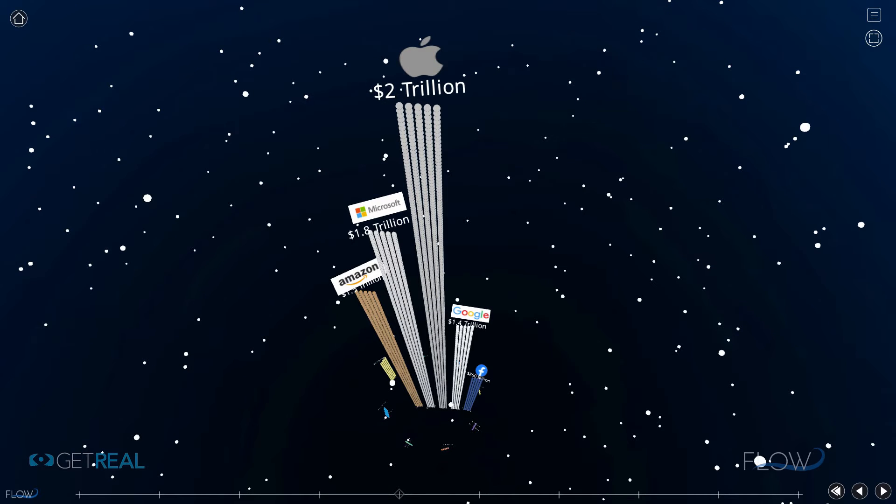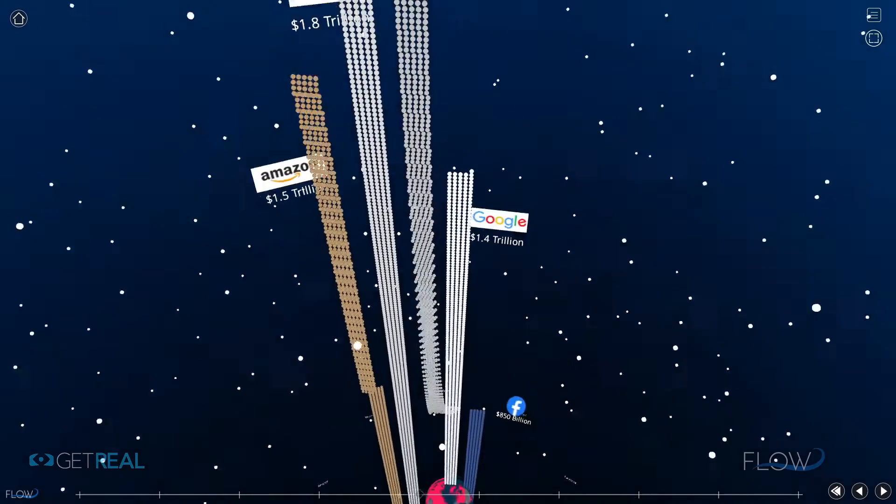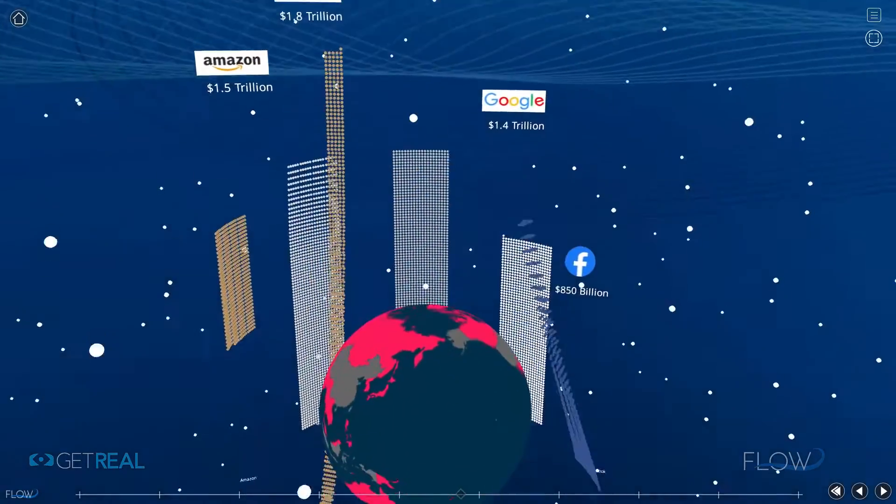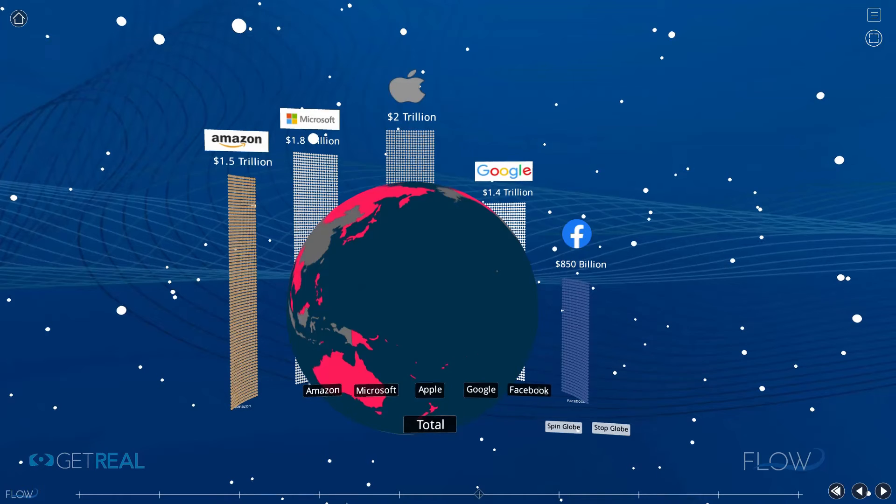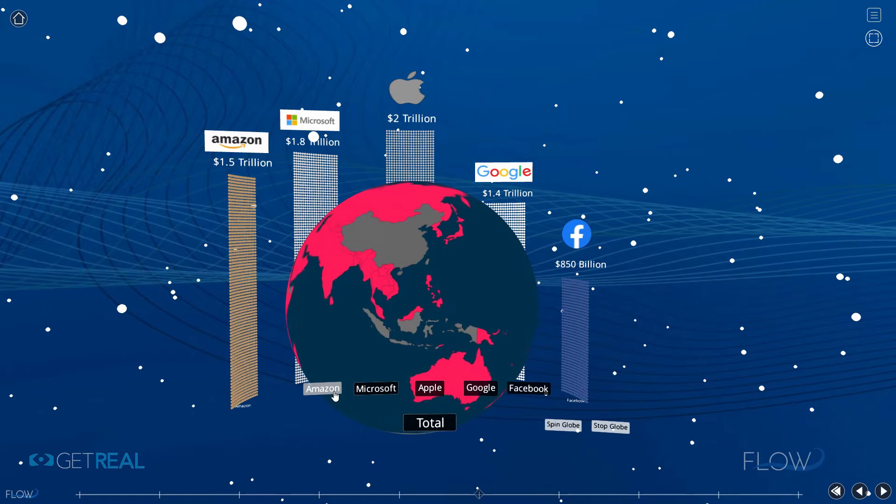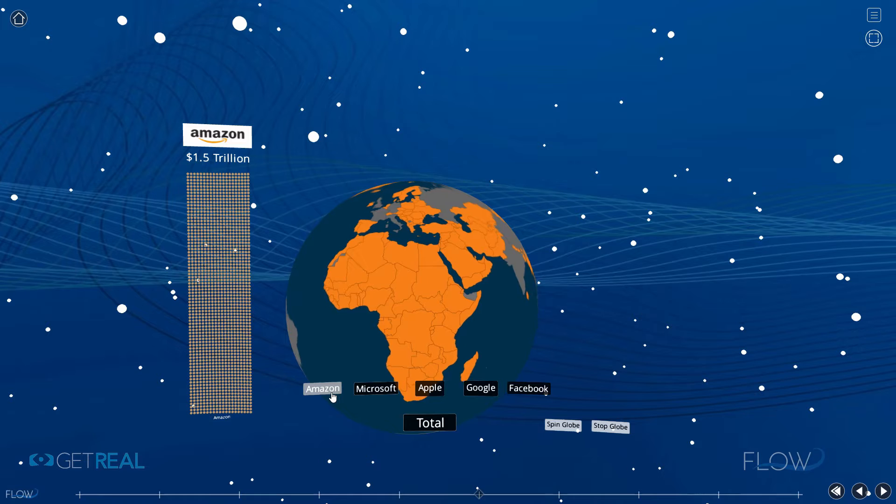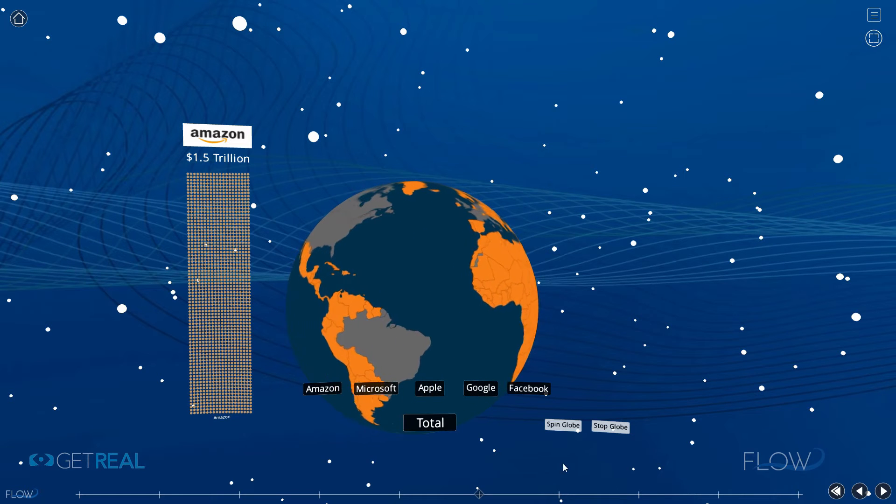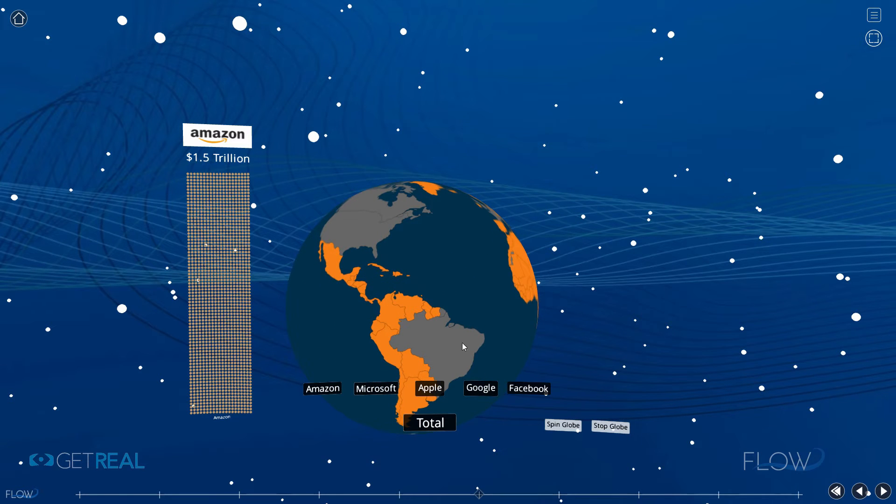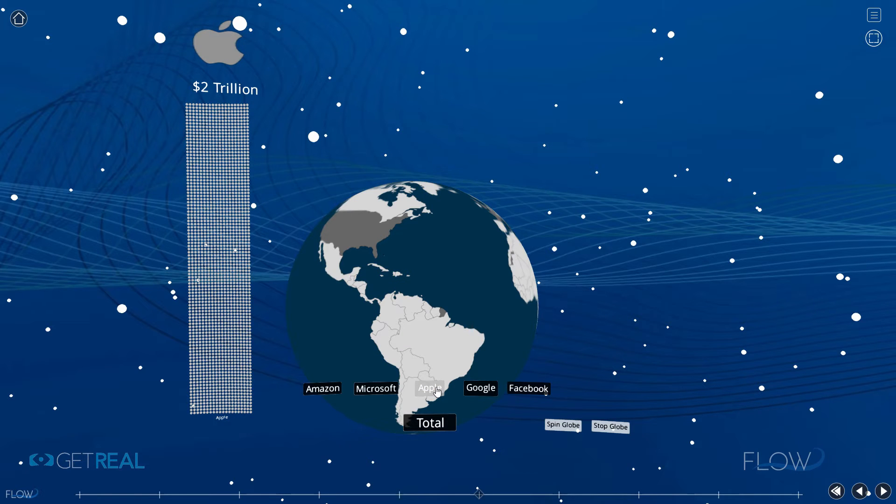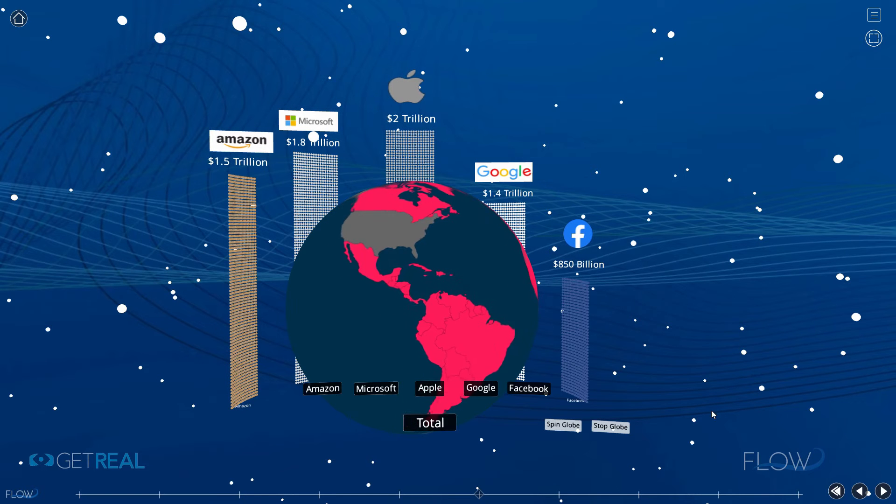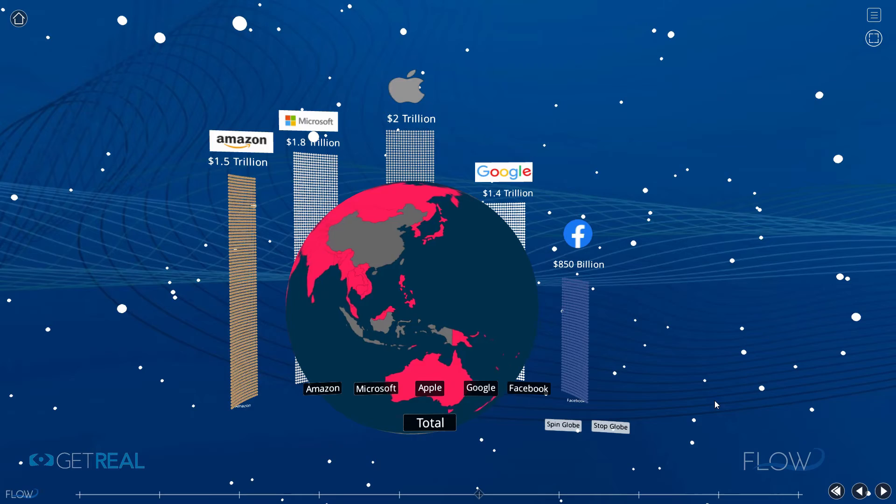But, Tyler, you might ask, how do these numbers compare to GDPs of countries? Great question. Each highlighted country has a smaller GDP than the selected company. So when selected on Amazon, we can see that Brazil, since it's not highlighted, has a greater GDP than the market cap of Amazon. But not greater than Apple's. And when we compare the world to their combined market cap, which is about $7 trillion, we see there's only a handful of unhighlighted countries with larger GDPs.